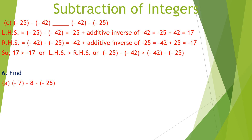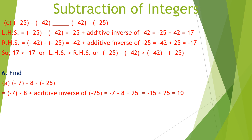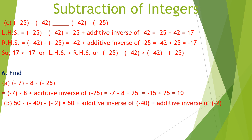For question 6, let's find minus 7 minus 8 minus minus 25. This equals minus 7 minus 8 plus additive inverse of negative 25, which equals minus 7 minus 8 plus 25. When we calculate this we get 10. Next, 50 minus minus 40 minus minus 2 equals 50 plus additive inverse of negative 40 plus additive inverse of minus 2, which equals 50 plus 40 plus 2, equals 92.